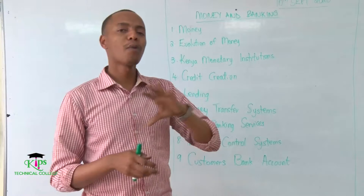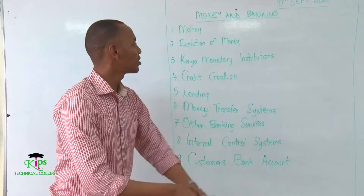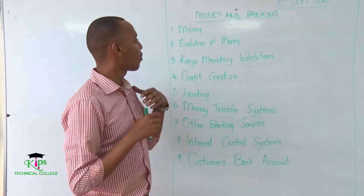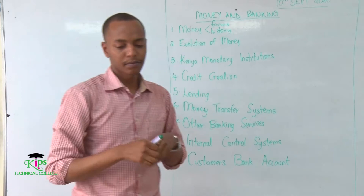Our first topic is money. Here we'll define what money is, talk about the history of the Kenyan currency and how it has been used. Then we'll talk about the origin of money — where did money come from? Did people just wake up and decide this is what money is and how we use it? We'll also cover the different forms of money that exist and the history of money.